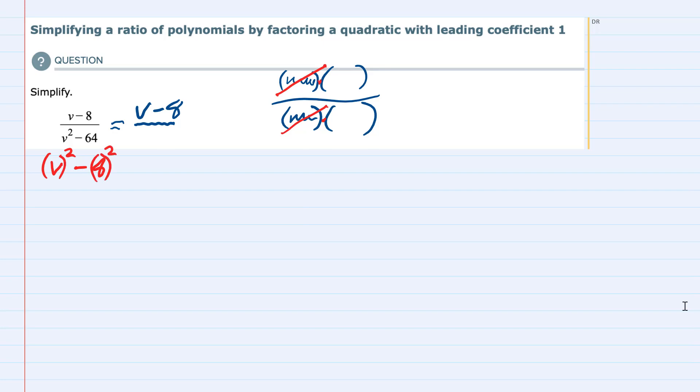And if we recognize this as the difference of two squares, we know that when we have something squared minus something else being squared, we can factor this as the first term minus the second term, times the first term plus the second term.